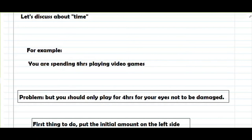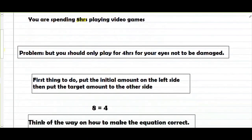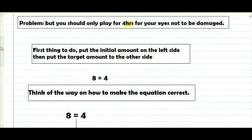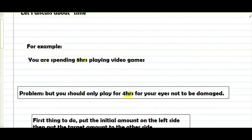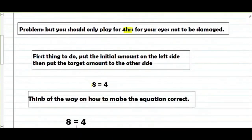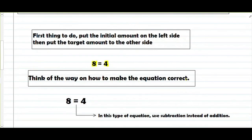Ang itidiscuss naman natin ngayon ay yung connection ng variable sa time o yung oras. For example, you are spending 8 hours playing video games, pero you should only play for 4 hours for your eyes that will be damaged. Ang initial natin is yung 8 hours, at ito yung 4 hours naman yung target. 8 hours kasi yun yung pinakauna palang initial, then yung target na amount mo ay yung 4 — 4 hours lang dapat naglalaro.